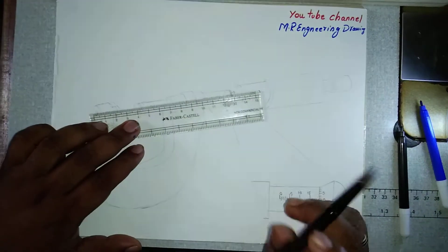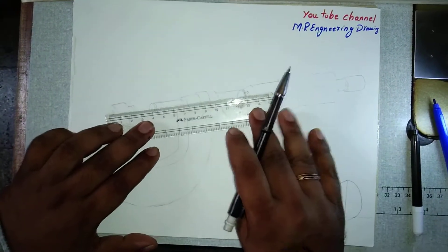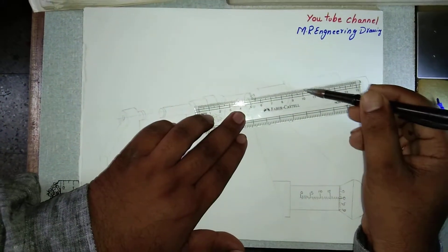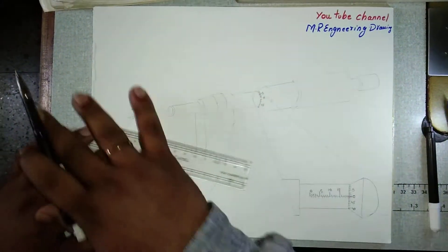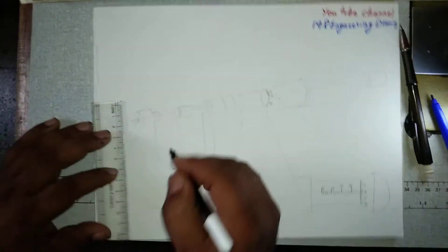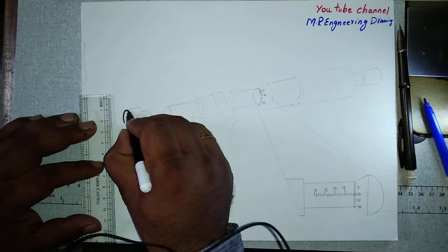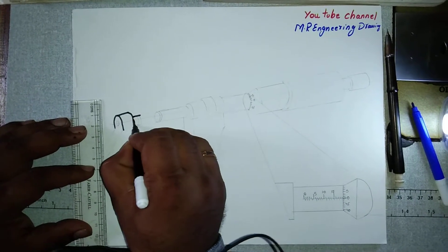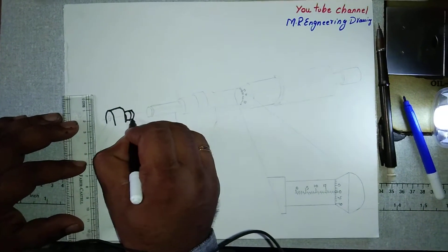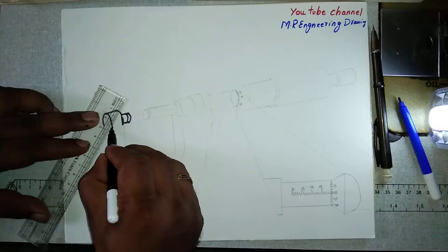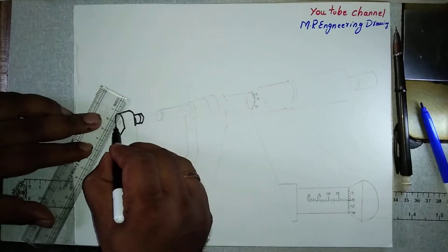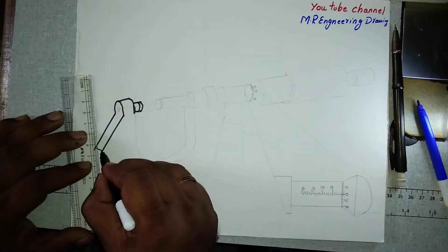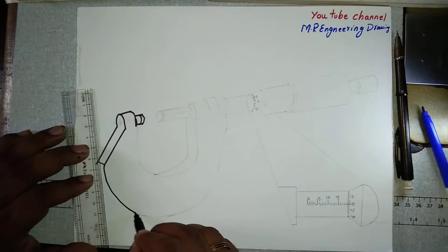Hello friends, how to draw an outside micrometer. Just take a style line, this is for a reference line. We start from one end. What I am drawing is the anvil, then take a crash line, one more crash line, just join like this.